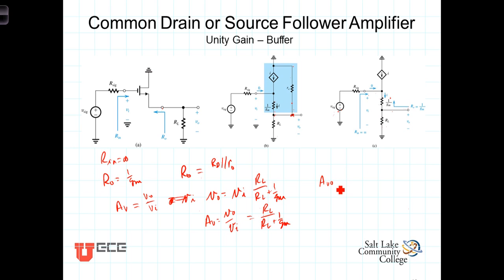Which is, of course, the output V out over V in when R sub L equals infinity, or in other words, there's no load resistance connected. So coming over here to the closed circuit gain, R sub L over R sub L plus 1 over G sub m. Let R sub L go to infinity, and we get then that A V zero, the open circuit gain, is just one.